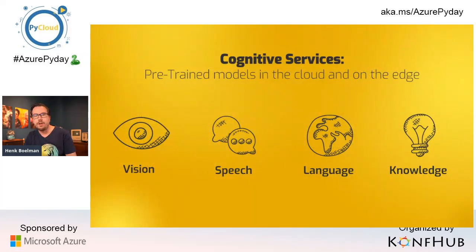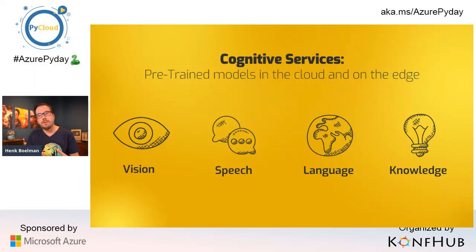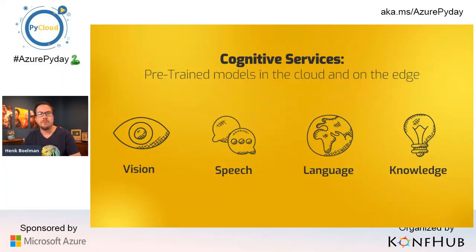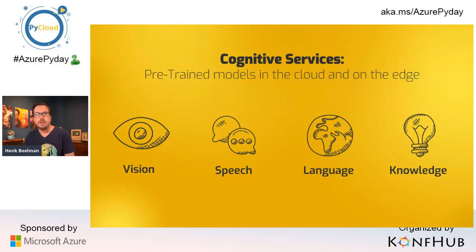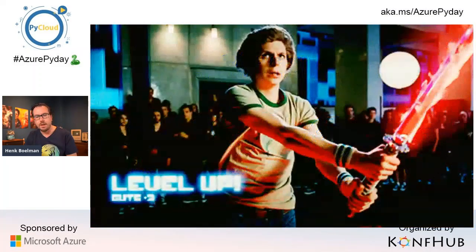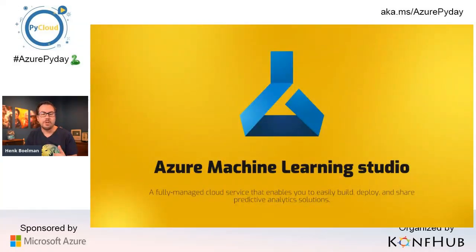Cognitive Services are pre-trained models that live in the cloud. Some of them you can pick up and deploy to the edge — for instance, if you want to run face detection locally in your own network, you can get a container with the Face API and deploy it. Cognitive Services are divided into four regions: Vision, Speech, Language, and Knowledge. Today, however, we're not going to call an API — we're actually going to build a machine learning model ourselves using Azure Machine Learning Studio.